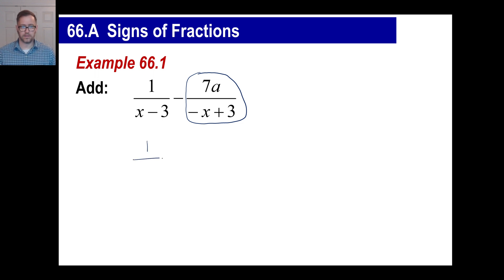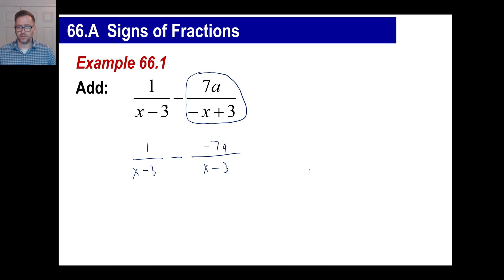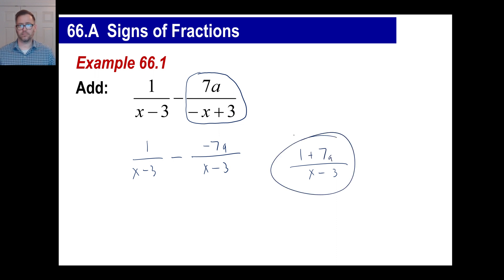I'm going to copy the x minus three, then copy the minus, then change the sign of every single term in that fraction — that turns into an x and a negative three. Now we have the same denominator. We have one minus seven a, which is the same as one plus seven a. We're done — that's the simplified fraction.